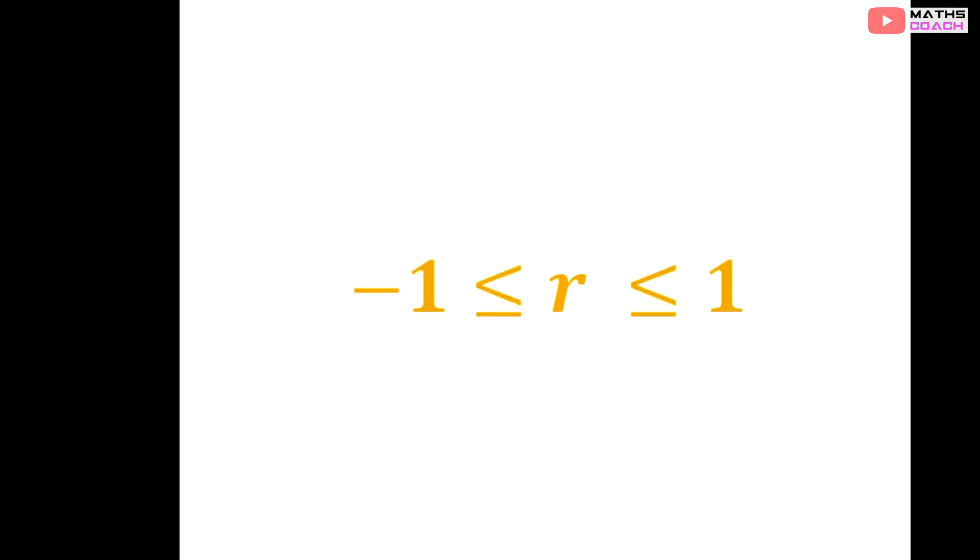Now in order to determine and compare the strength of r, we need to know what values r takes on. R happens to take on values of negative 1 through to 0, all the way to 1. And based on those inequalities, you can see it includes negative 1 and 1. Realistically however, you are very rarely going to achieve a PMCC of exactly negative 1 or 1. You are more likely to get values between minus 1 and 1. But we need to understand what those numbers mean and how we compare that to our correlation strength.